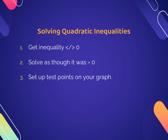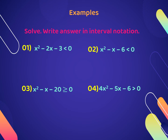We're going to be factoring today. Technically, on all these quadratic inequalities, you could use any of the four techniques we learned — completing the square, quadratic formula, square root method, or factoring. Generally, factoring is the fastest way, but you could do completing the square to get your two test points. For the majority of these, I'm going to factor because it's the fastest.